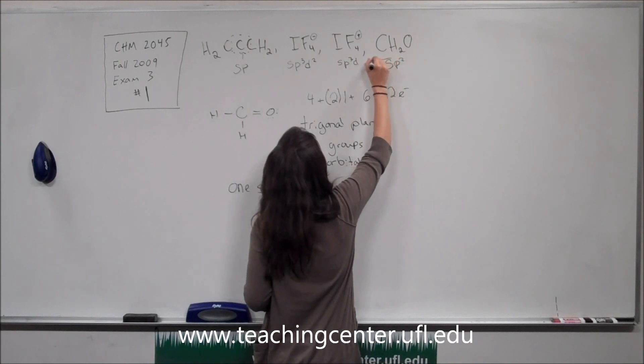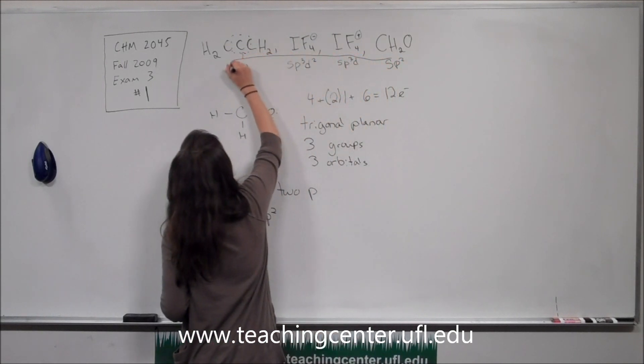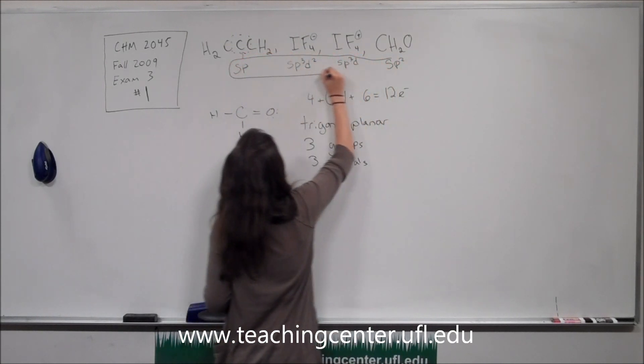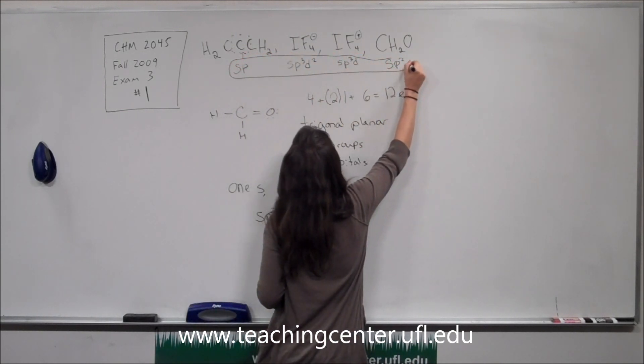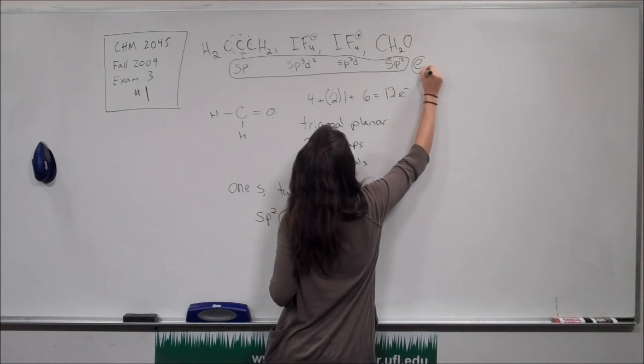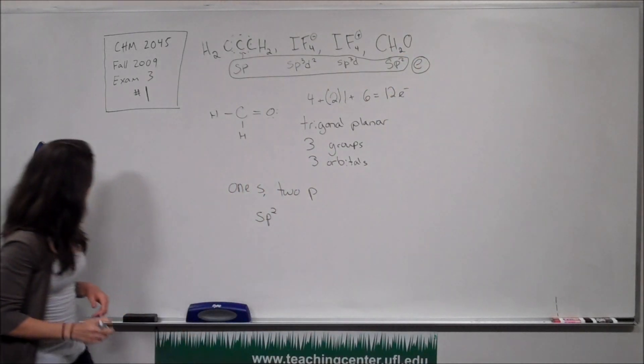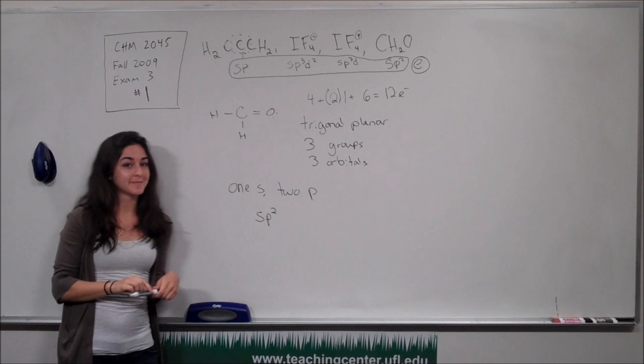So that's our answer — sp² hybridization for CH₂O — which is answer choice E.